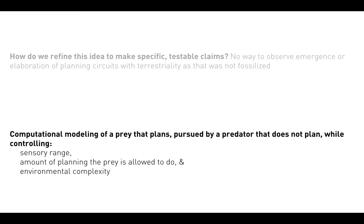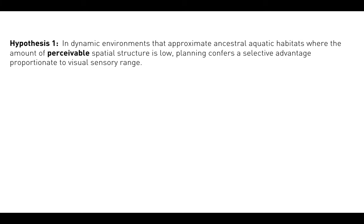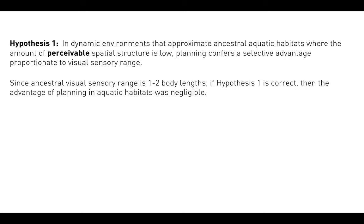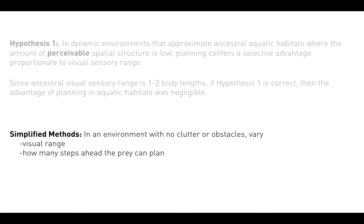The first hypothesis is that in dynamic environments that approximate ancestral aquatic habitats, where the amount of perceivable spatial structure is low, planning confers a selective advantage proportionate to visual sensory range. Since ancestral visual range is on the order of one to two body lengths, if hypothesis one is correct, then the advantage of planning in aquatic habitats was negligible. Our simplified setup: an environment with no clutter or obstacles, and we vary visual range and how many steps ahead the prey can plan.